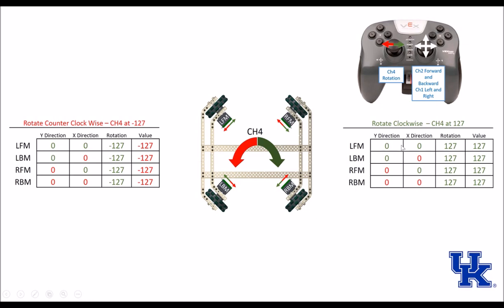When we want it to rotate clockwise, we set channel 4 to 127. We plug that 127 true value in for our rotation and add everything together, and we get a clockwise value of 127, causing the robot to rotate clockwise.